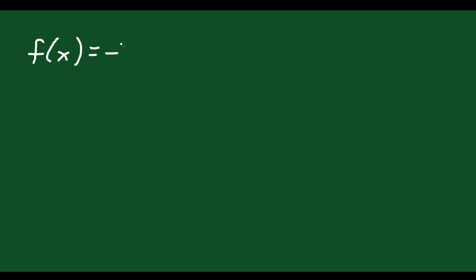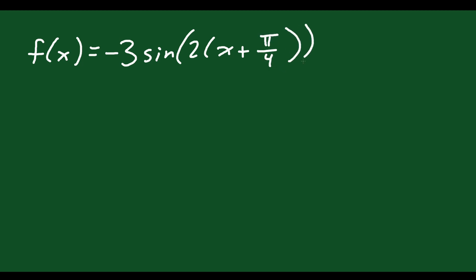Let's say you're given f(x) equals negative 3 sine of (2x + π/4) plus 3. The only thing that's different now is we're using radians instead of degrees, but everything else is exactly the same.